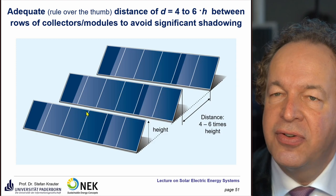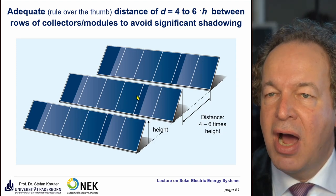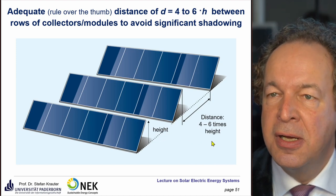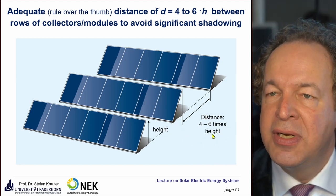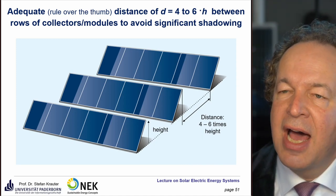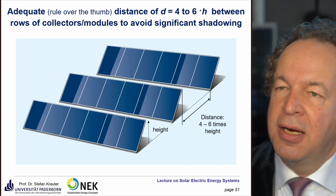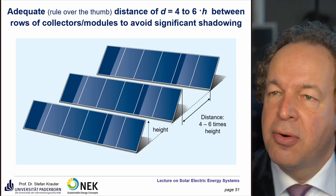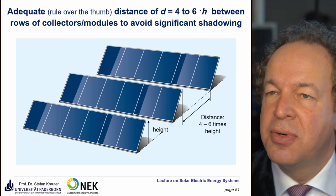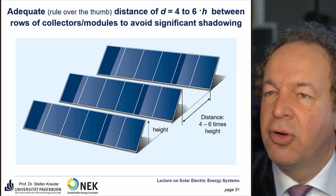In winter around the 21st of December, the sun elevation angle in Paderborn is only about 14.7 degrees, so the shadow cast is rather long. You must maintain a very large distance between rows. A rule of thumb for Germany is to keep a distance of four to six times the height — a compromise between energy loss from shadowing and land area loss.